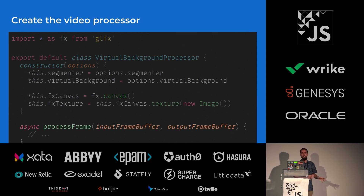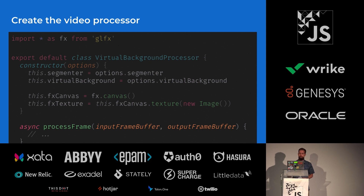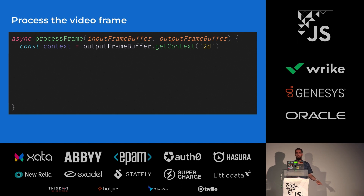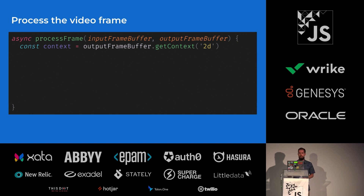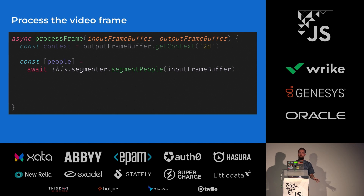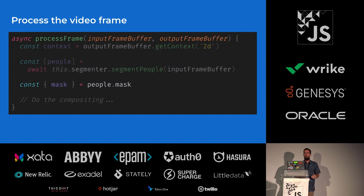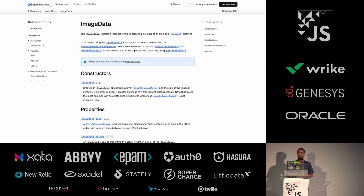Once we have instantiated our VirtualBackgroundProcessor, we will have a video processor that we can pass back to our Twilio video track using the addProcessor method. We'll provide it with the segmenter that we created, using TensorFlow with the MediaPipe selfie segmentation model, and store it as this.segmenter on the instance. We'll also store our chosen virtual background as this.virtualBackground, and initialize a special WebGL canvas called FX canvas from the GLFX library along with FX texture with an empty image. We'll use this to quickly store the segmentation mask for each frame to be filtered with the bilateral filter. With the VirtualBackgroundProcessor class initialized, we can implement the processFrame method, which will run on every frame of video. The first thing we'll need to do is get the 2D context from our outputFrameBuffer HTML canvas element so that we can perform compositing operations on the output image. Next, we'll segment the input image coming from the inputFrameBuffer off-screen canvas by passing it to our segmenter's segmentPeople method. After the machine learning runtime has processed the image, we'll be able to get the segmented image data as a mask from the resultant object. Image data here is just an array of RGBA pixel data, which we can use to quickly paint an image onto a canvas.